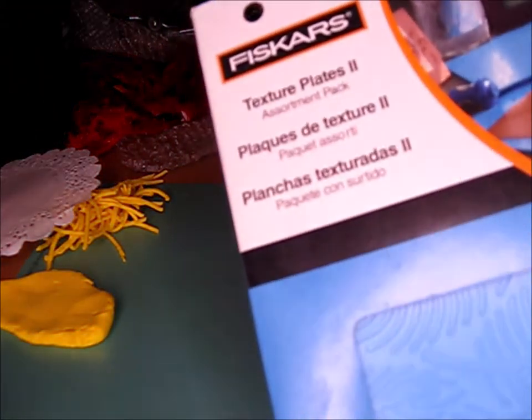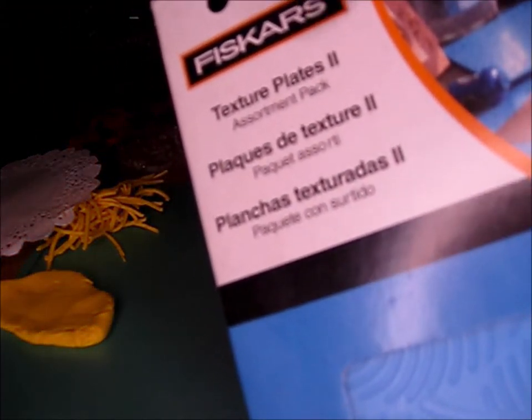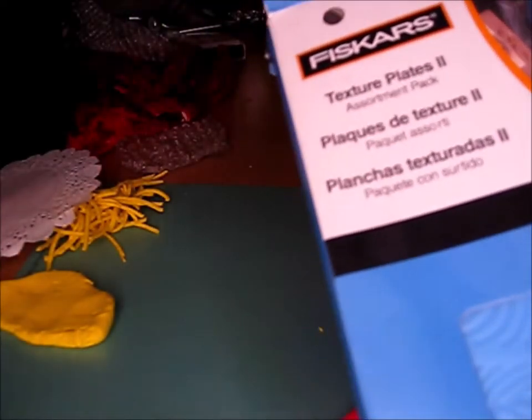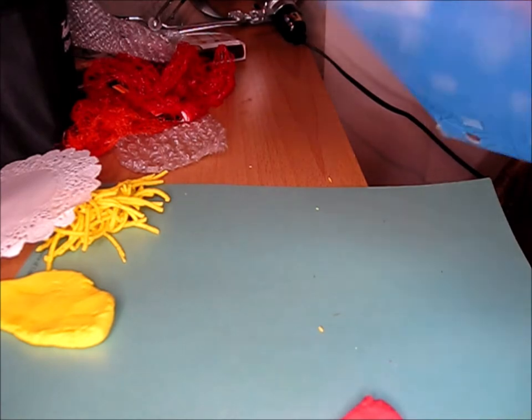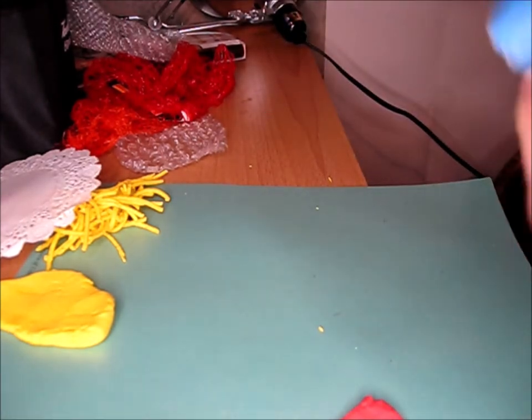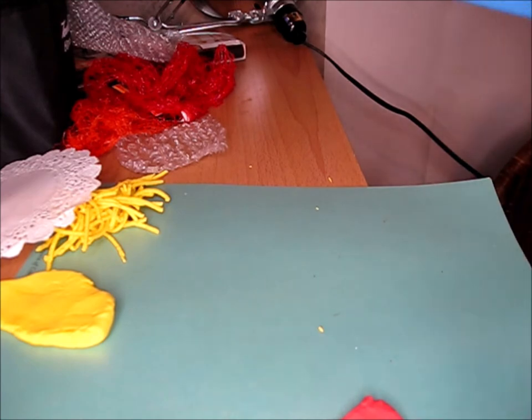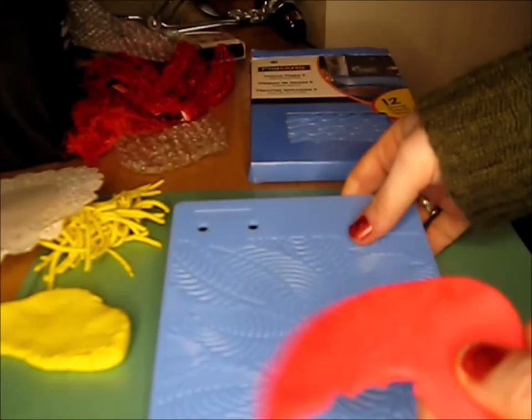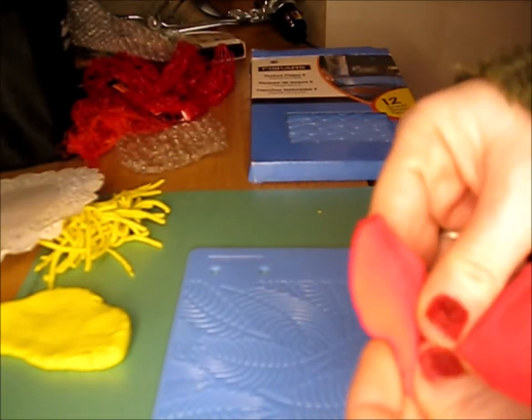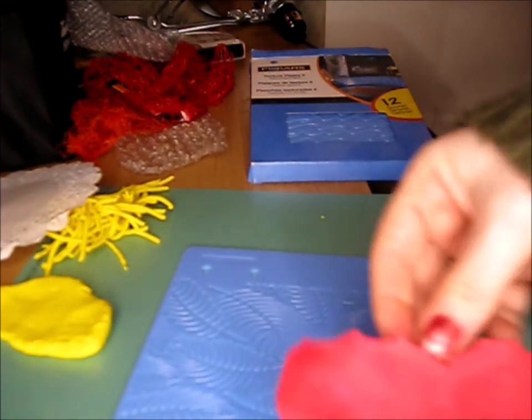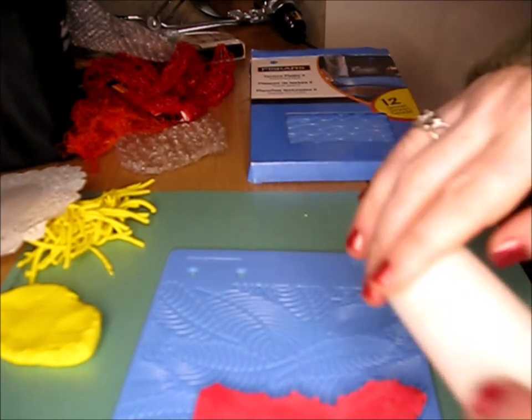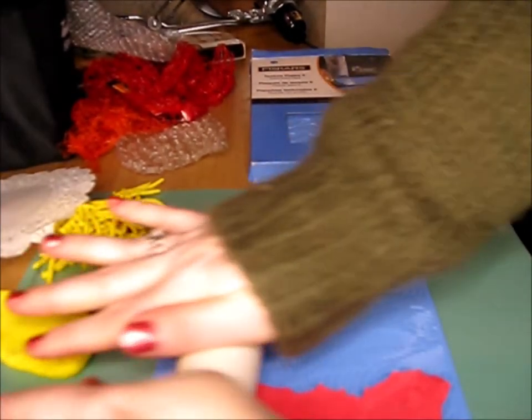And last, I have some texture plates. These plates were specifically designed to show texture in clay. This one shows a forest of leaves. Take your slab of clay. Find the area of the slab that you want it to be printed on. Put that on the bottom and roll.